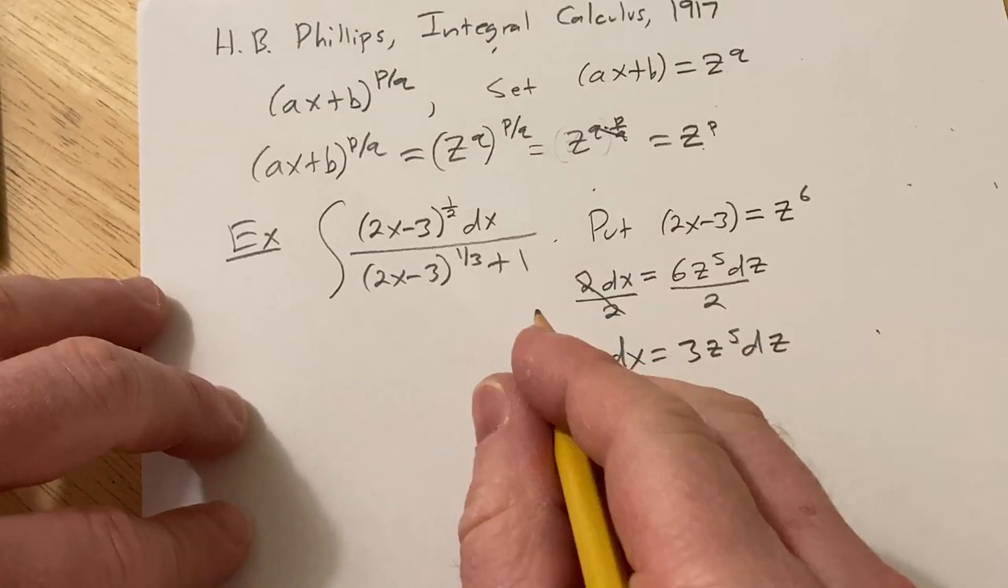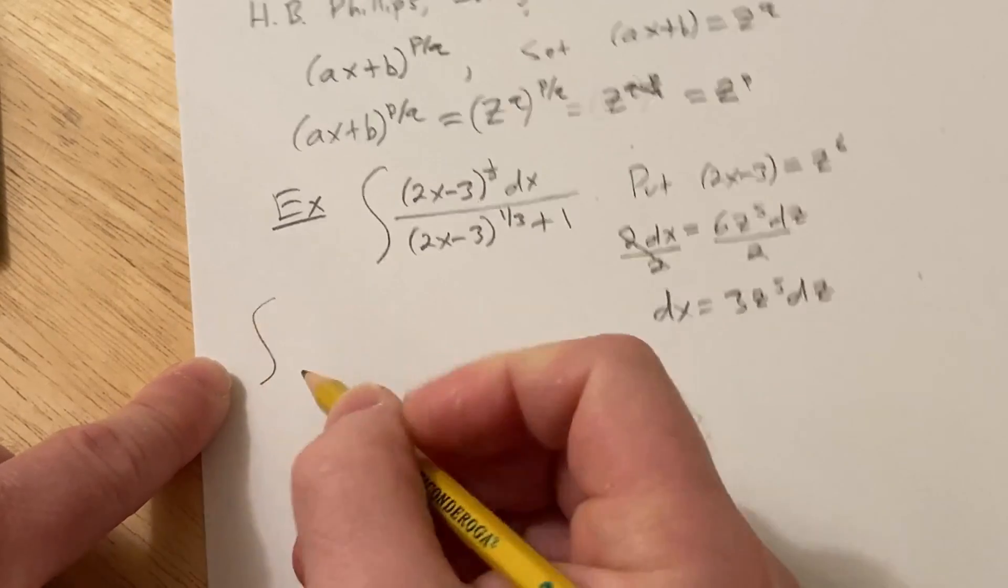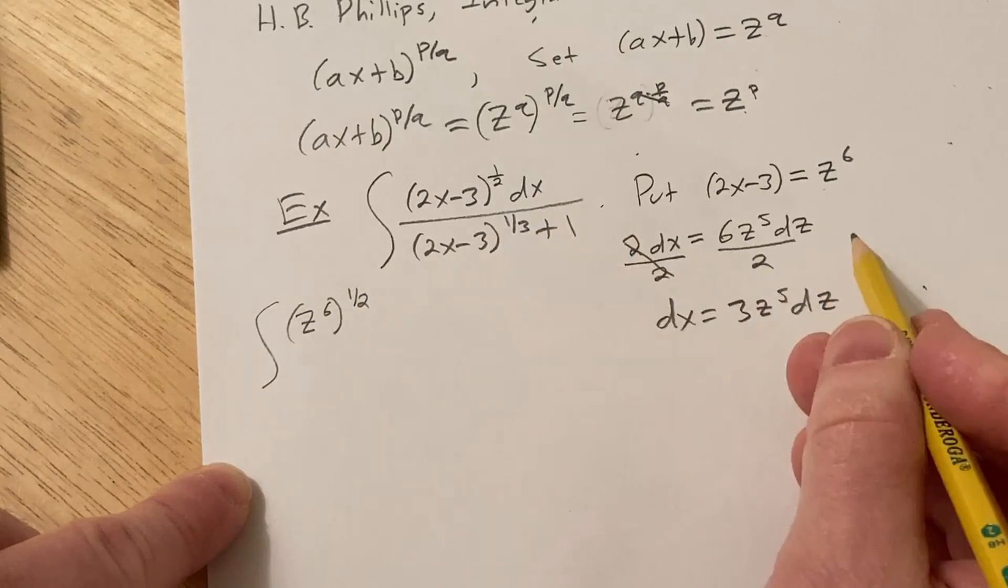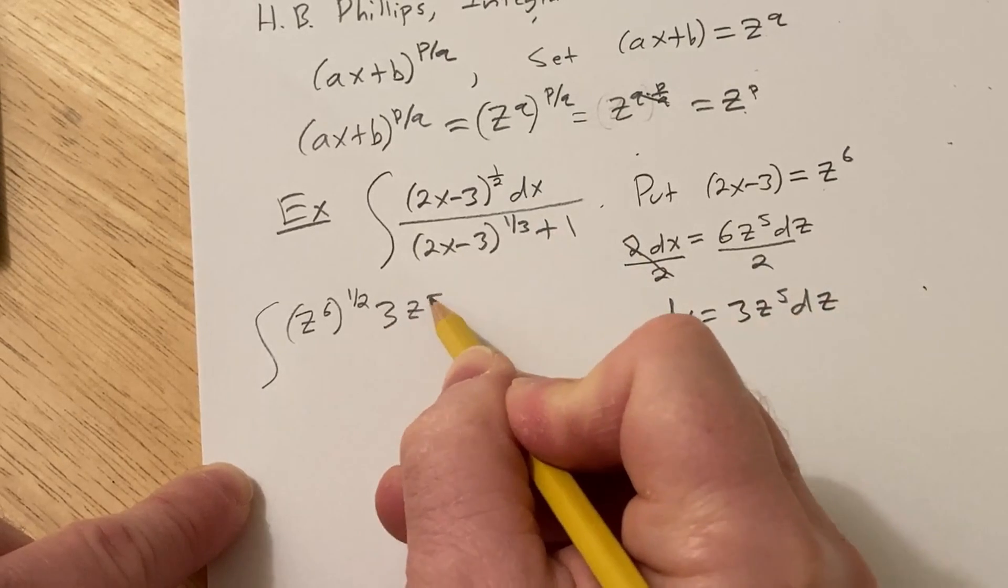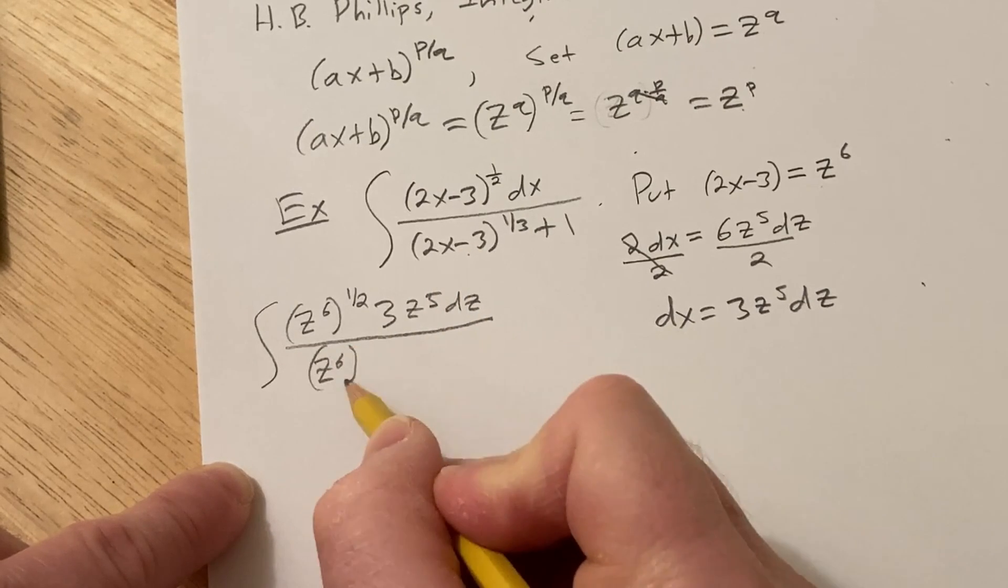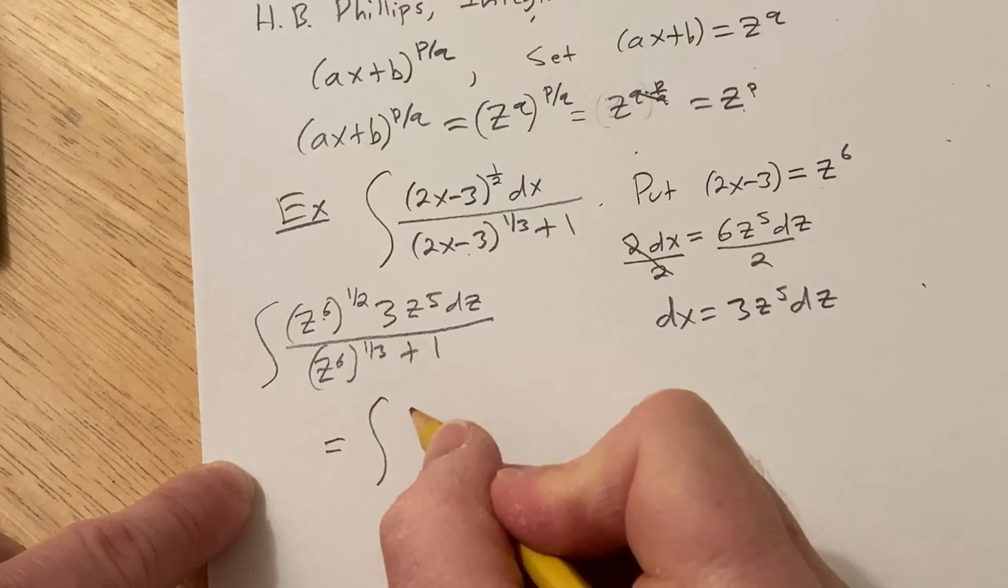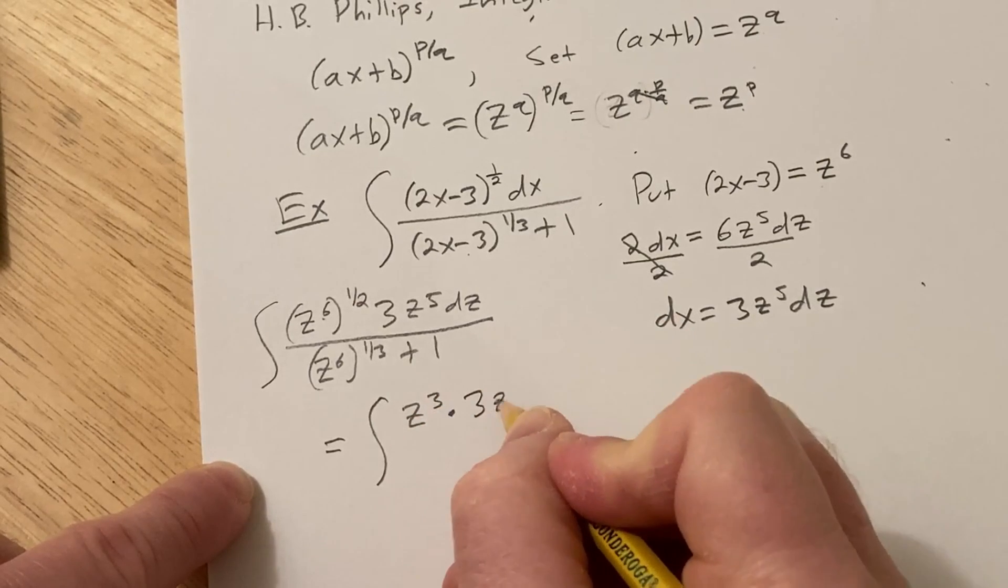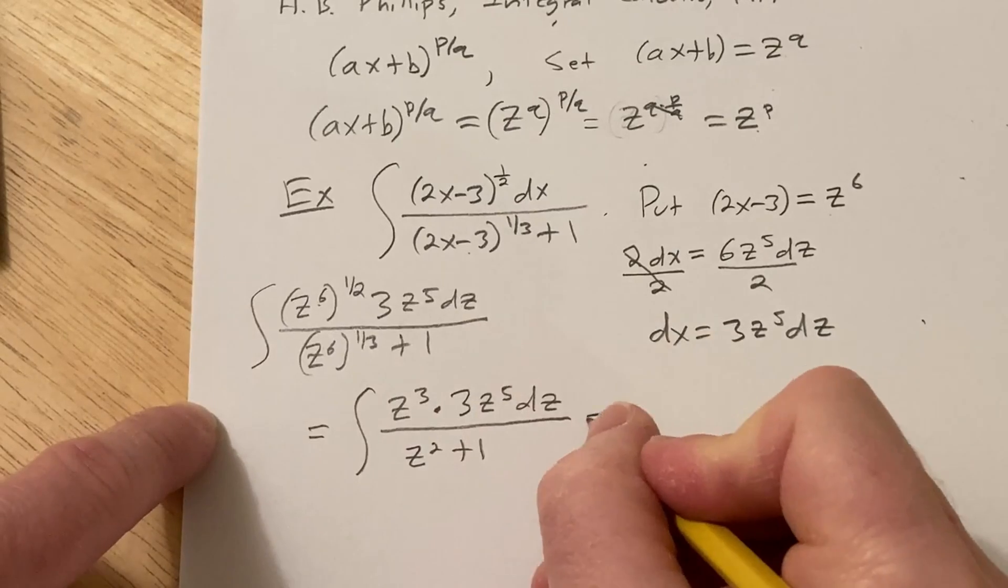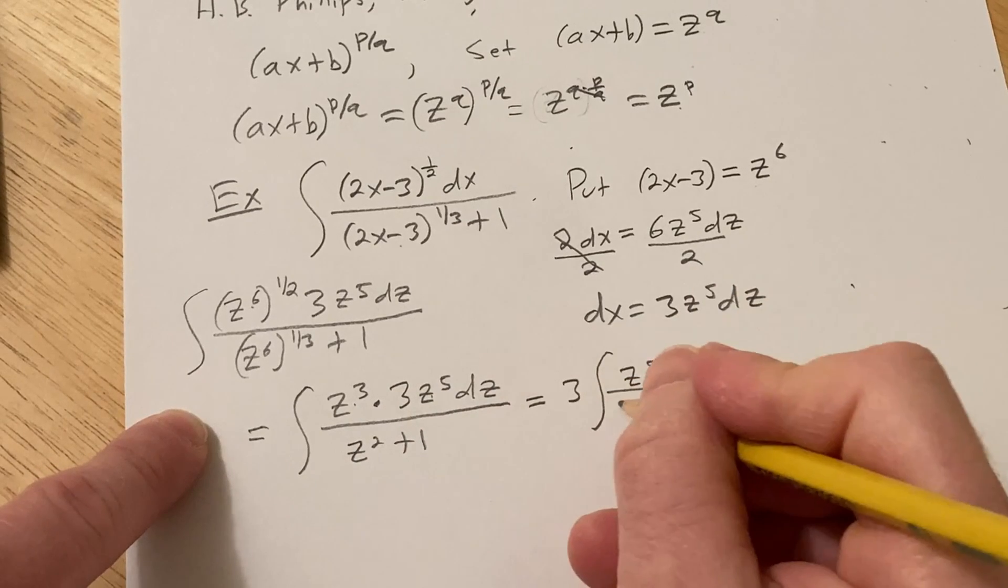Now we're going to carefully make the substitution. 2x-3 is simply z^6. So this is z^6 to the 1/2, and dx is 3z^5 dz. This is over z^6 to the 1/3 plus 1. Continuing, one half times six is three, so this is the integral of z^3 times 3z^5 dz over z^2 plus 1. Pulling the three out, we have 3 times the integral z^8 over z^2 plus 1 dz.